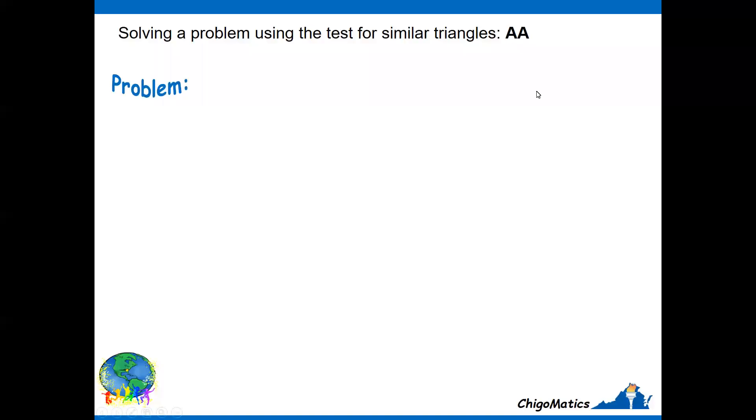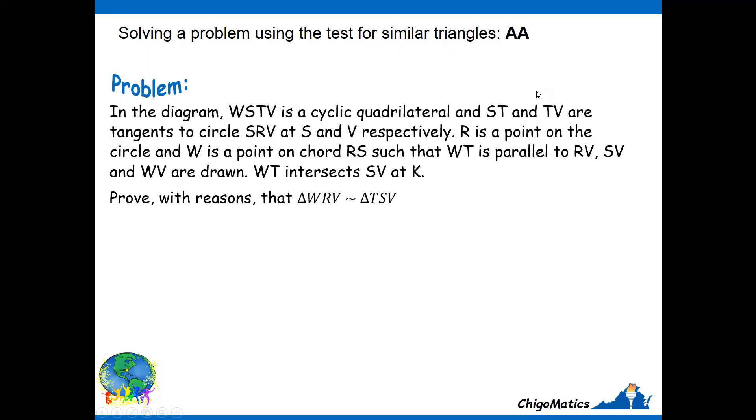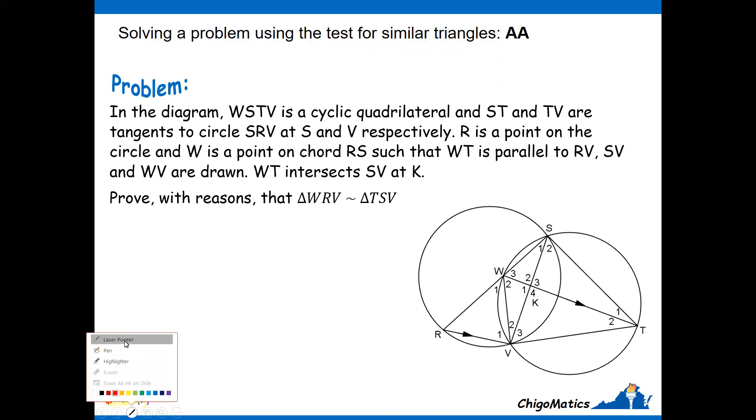Solving a problem using the tests for similar triangles: angle-angle test. The problem reads that in the diagram, WSTV is a cyclic quadrilateral, and ST and TV are tangents to the circle.